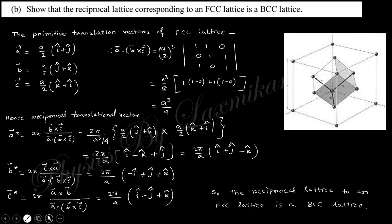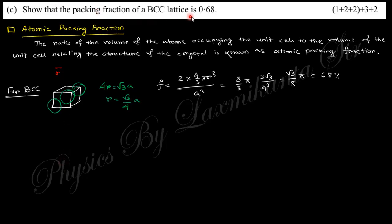Next, show that the packing fraction of BCC lattice is 0.68. Packing fraction is the ratio of number of atoms occupying the unit cell to the volume of the unit cell. For BCC body-centered cubic, the diagonal √3a equals 4r, so r = (√3/4)a. The packing fraction is 2 × 4πr³/3 divided by a³. Per unit cell, the number of atoms is 2, so we get approximately 68 percent or 0.68.